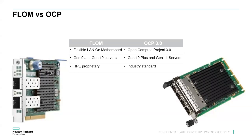There isn't really a technical advantage in moving to OCP; it's that OCP is an industry standard. HPE decided, in the direction of wanting to become more compatible with open standards, they would do away with the proprietary FLOM and go with the OCP slot instead. Because OCP 3.0 is an open standard, any manufacturer's OCP 3.0 NIC card will work in an HPE Gen 11 or Gen 10 Plus server.